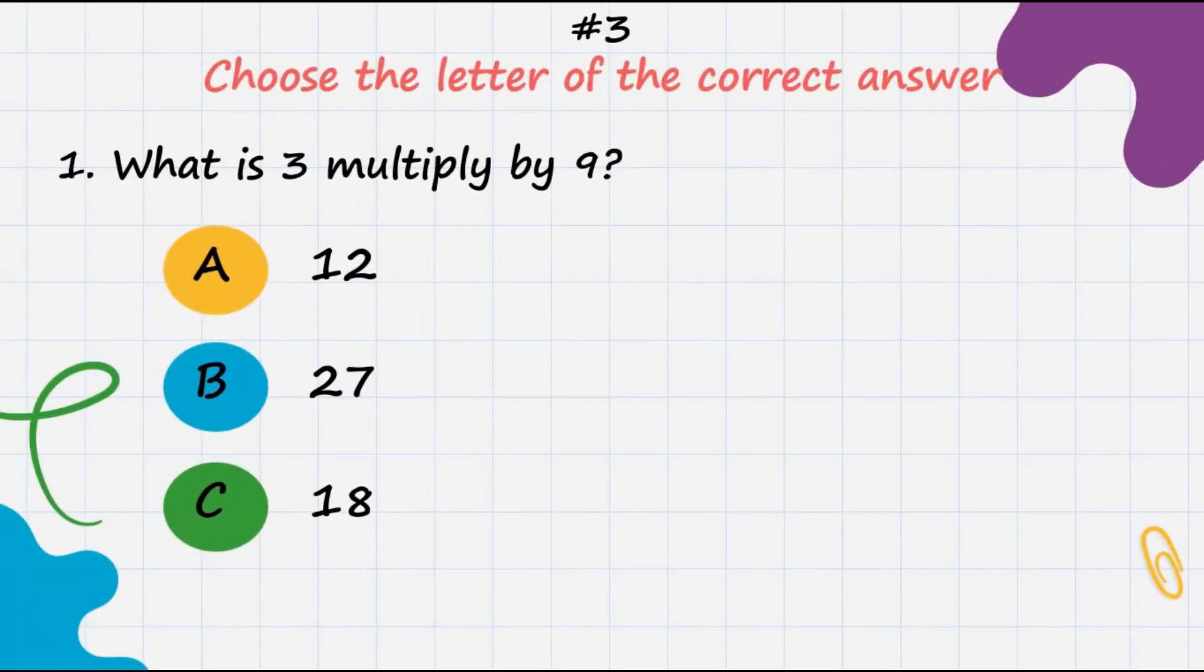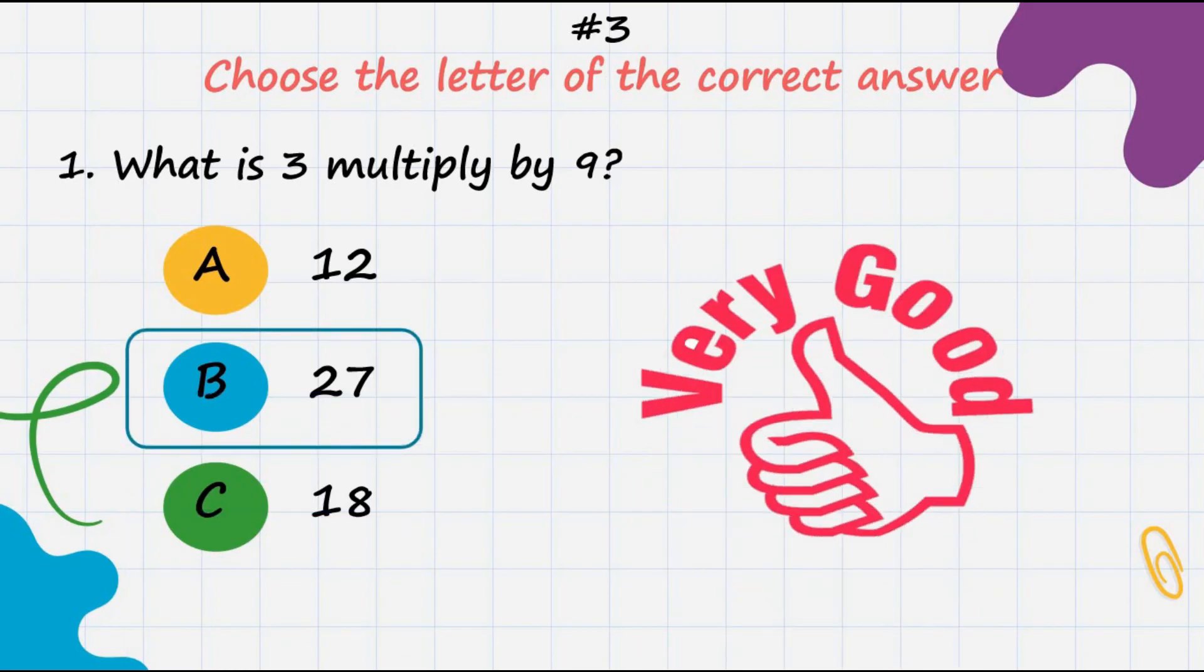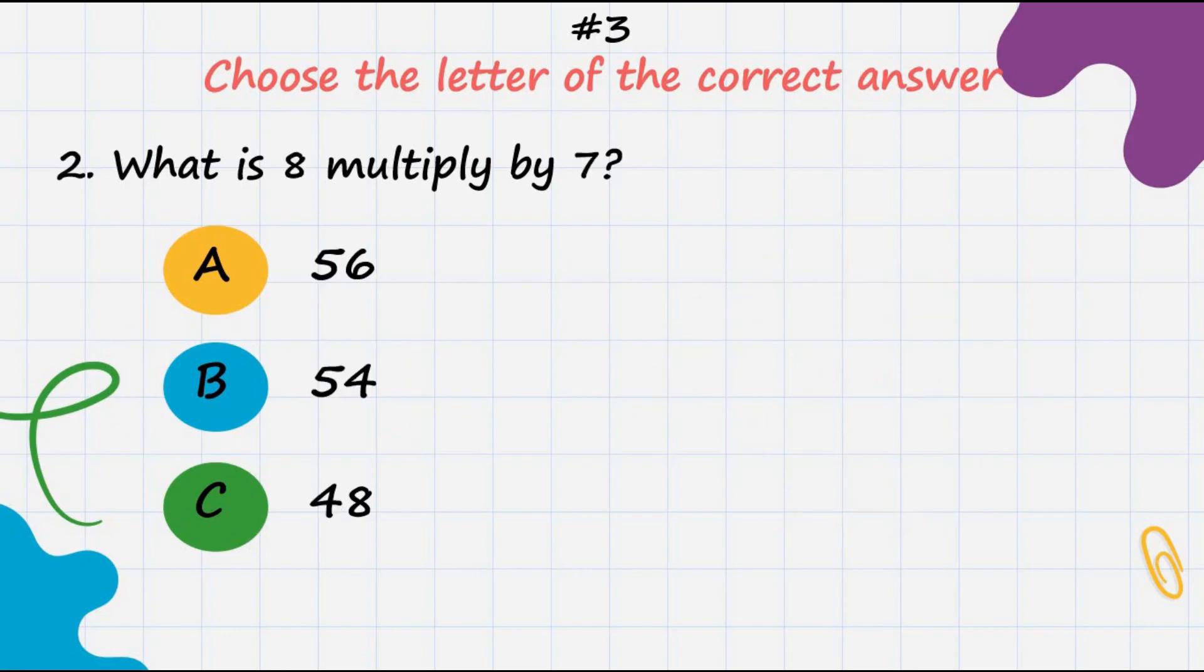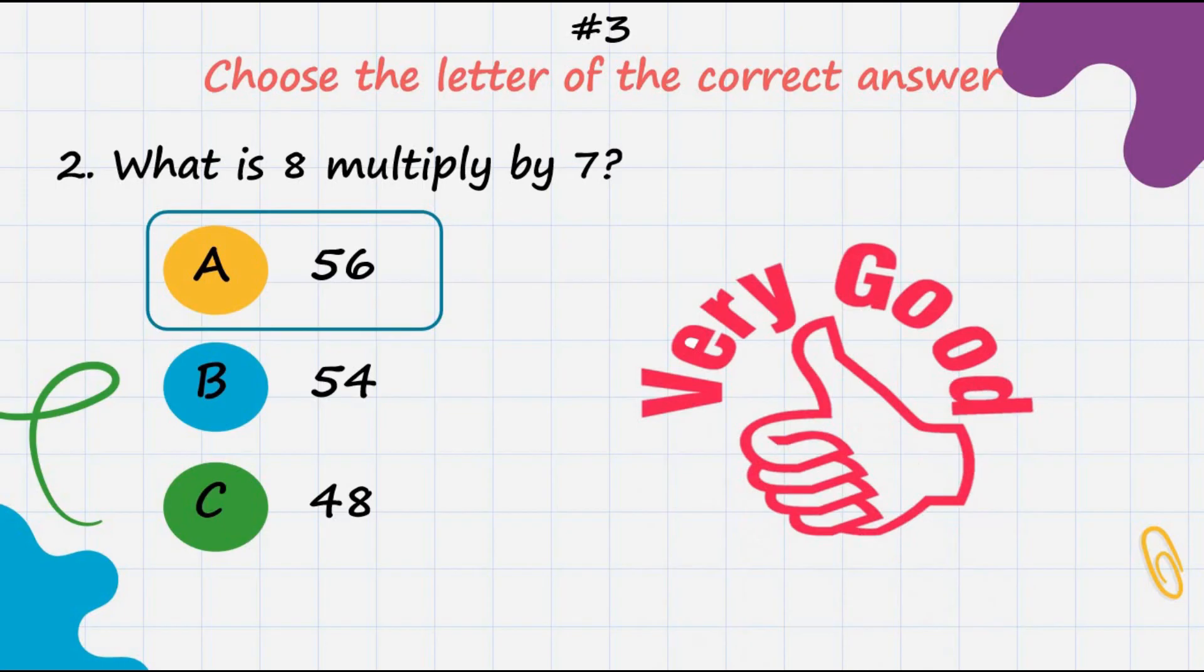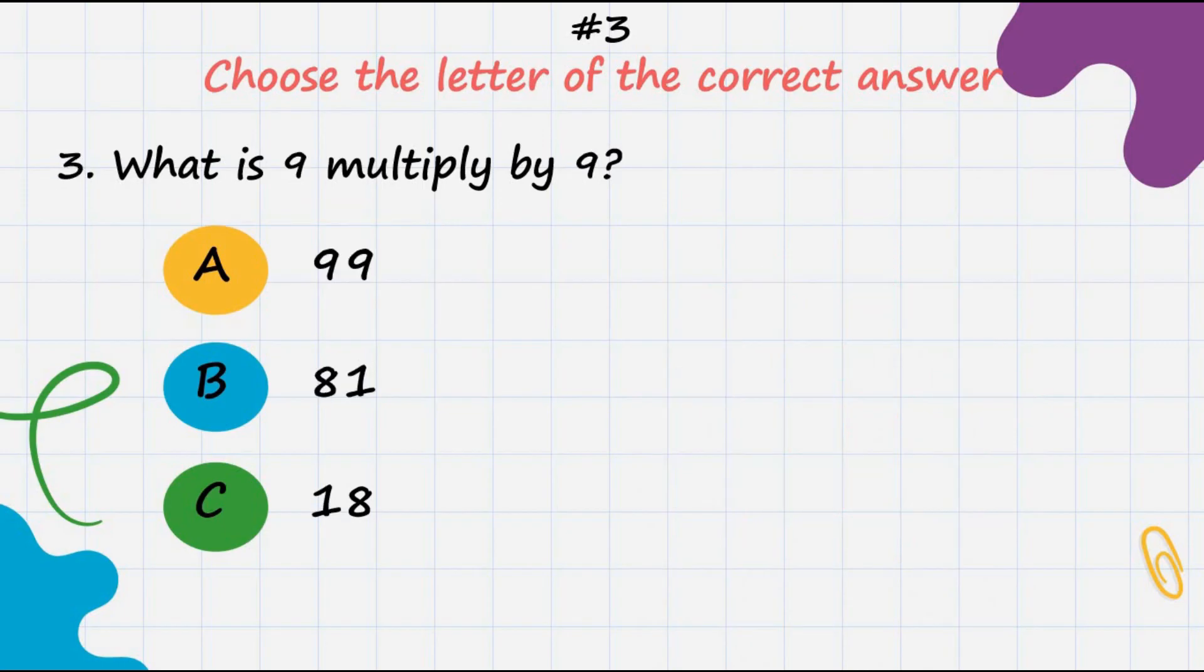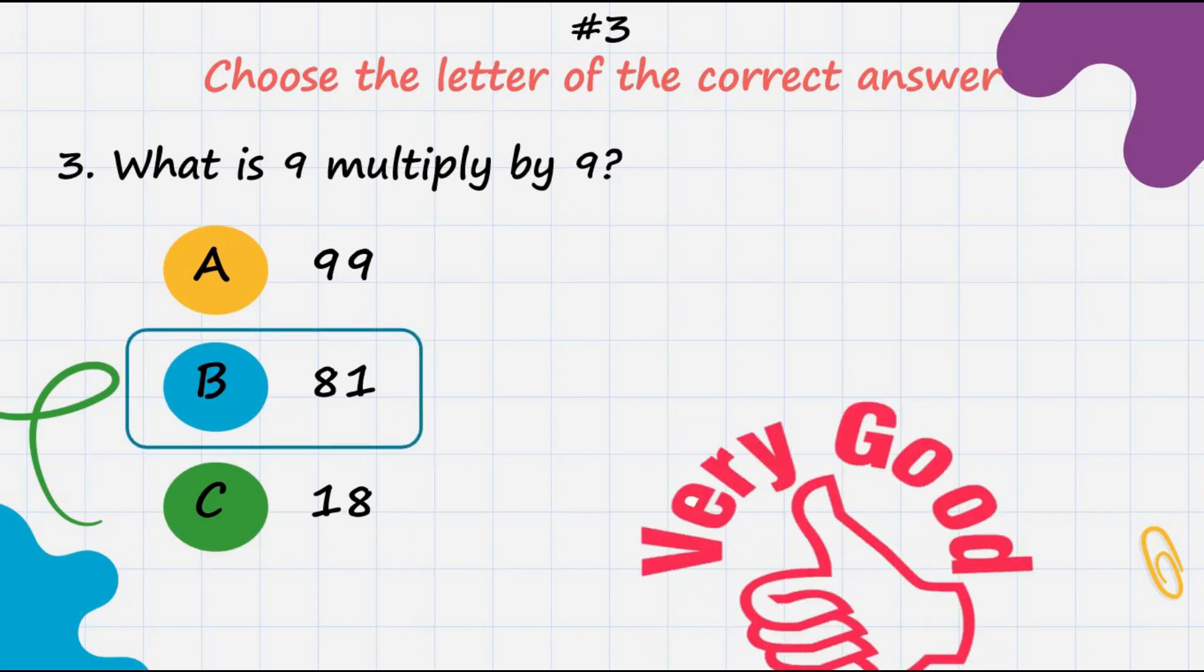For the last activity, choose the letter of the correct answer. Number one: What is 3 multiplied by 9? Very good, it's 27. Number two: What is 8 multiplied by 7? Very good, it's 56. Number three: What is 9 multiplied by 9? Excellent, it's 81.